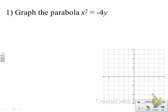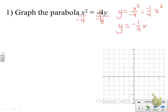Here's our first example. Notice that x is the variable that's squared, and that means we want to isolate the non-squared variable. To get y by itself, we just divide both sides by negative four. So our equation becomes y equals x squared divided by negative four. Since there's a one in the numerator, we pull out a coefficient of negative one-fourth. That's our a value, and we're working with the equation y equals negative one-fourth x squared.